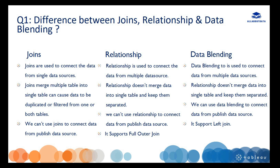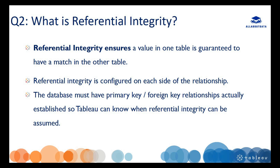We can't use joins and relationships to connect data from a published data source, but we can use data blending to connect data from a published data source. In joins, we have 4 types: inner join, left join, right join, and full outer join. Relationships support only full outer join, and data blending supports left join.